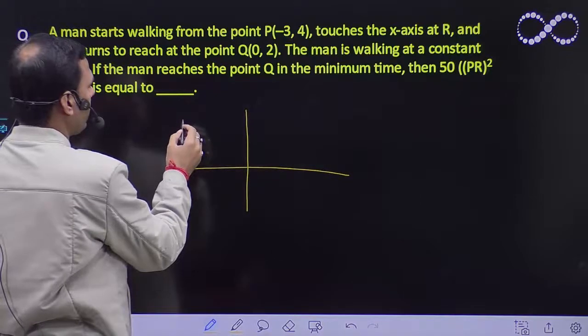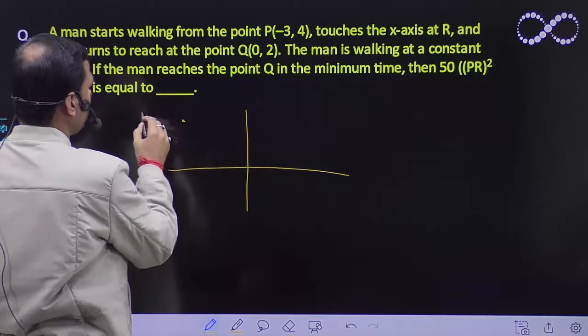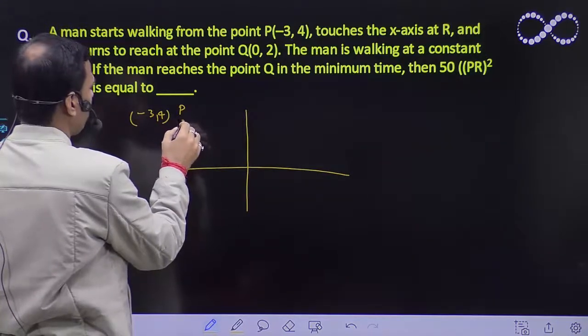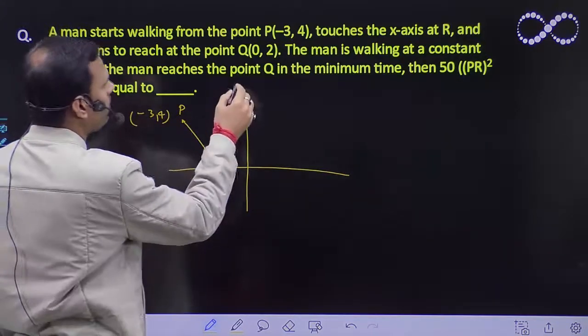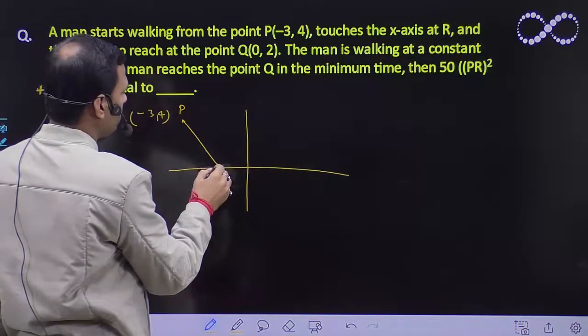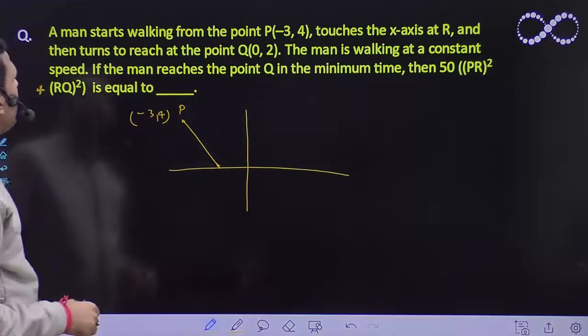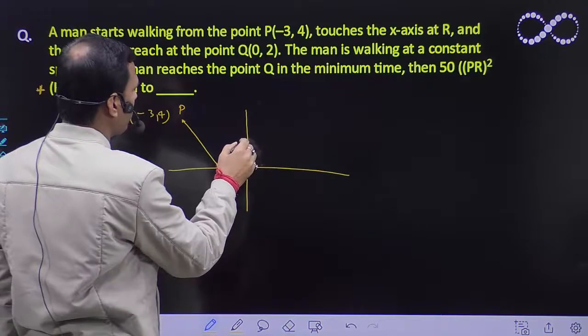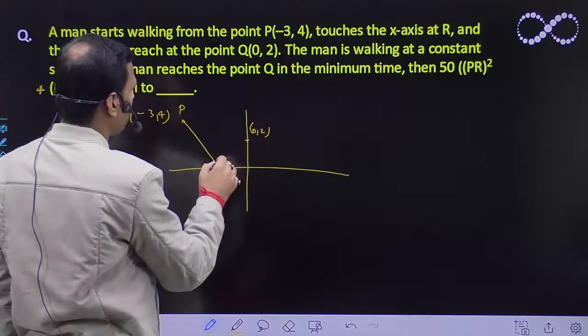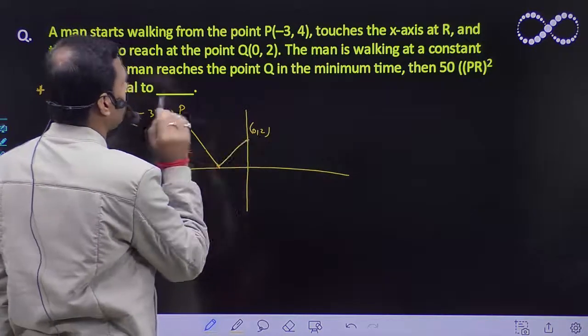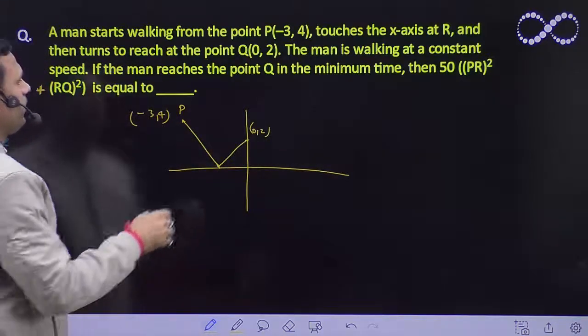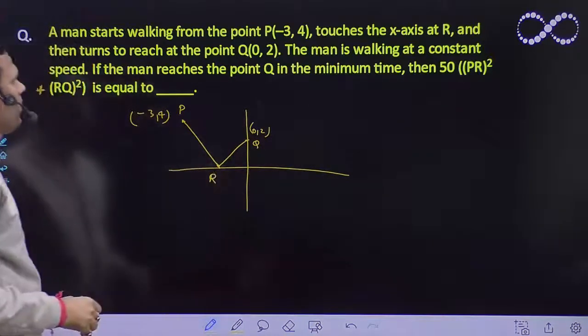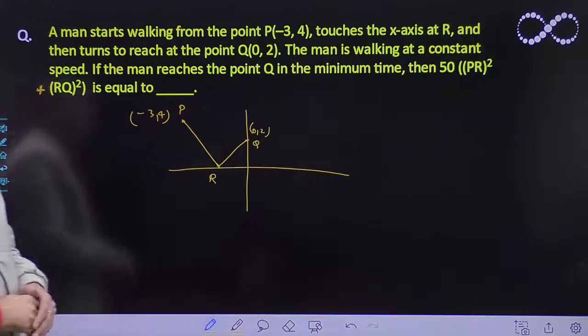Let's make a diagram. Point P is at (-3, 4), and then he turns to reach at the point Q(0, 2). And this point R is on the x-axis.